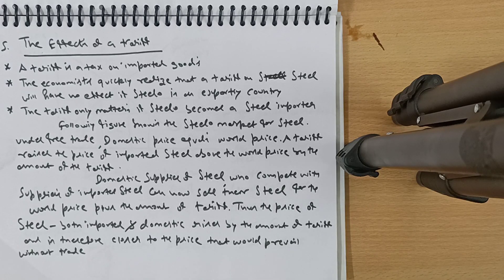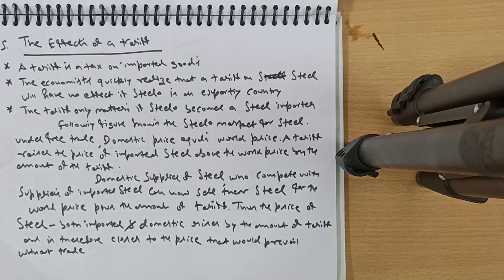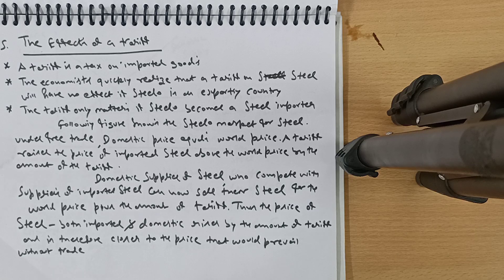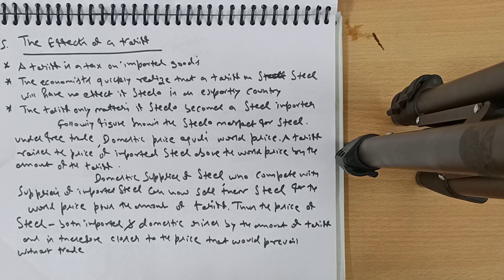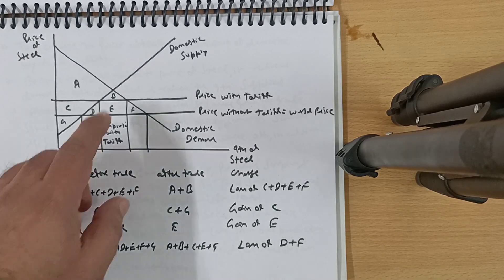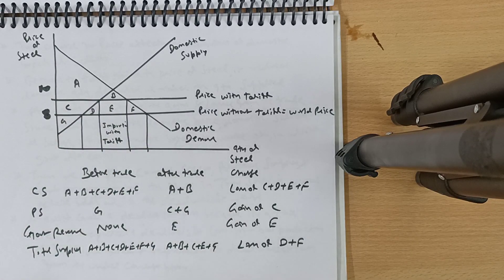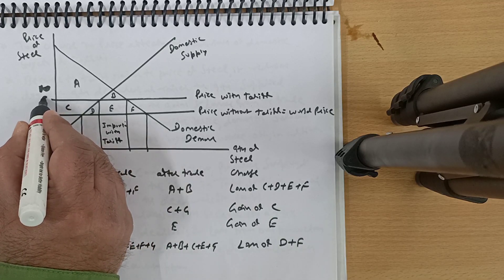Suppose the world price is 8 rupees and the government imposes a 1 rupee tariff — now the price becomes 9 rupees when importing. Domestic suppliers, competing with imported steel, can now sell at world price plus tariff. Previously, when abroad was 8 and domestic was 10, consumers would import at 8. After the tariff, imports cost 9, so domestic sellers also sell at 9. Thus the price of steel — both imported and domestic — rises by the amount of the tariff and moves closer to the pre-trade domestic price.